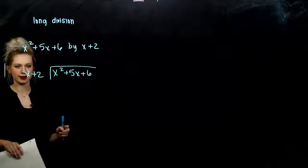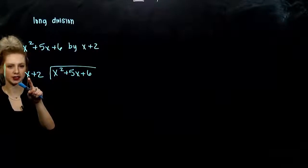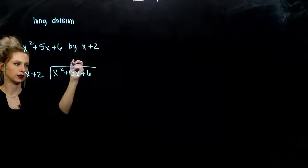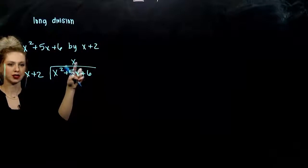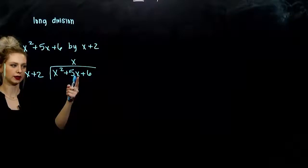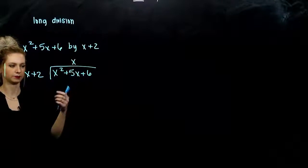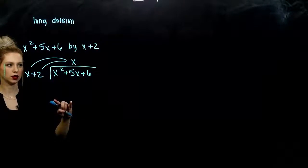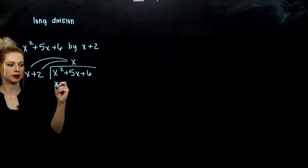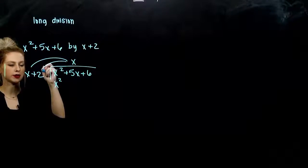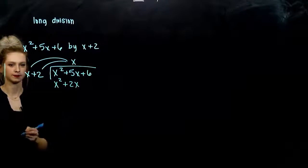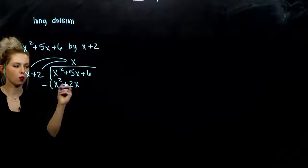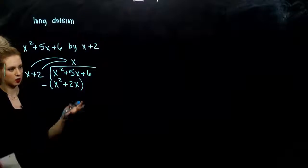The first question we want to ask: what do I need to multiply x by to get me to x squared? I need to multiply by x, and we write it above the matching term below it. I had an x down here, I wrote the x factor above it. Now we take that and multiply it to each of these terms and write them below. So x times x will give me x squared, and x times positive 2 will give me positive 2x.